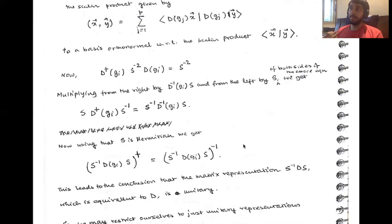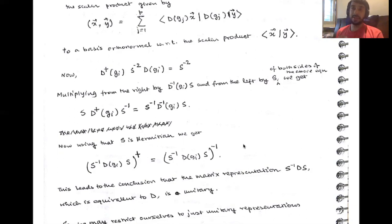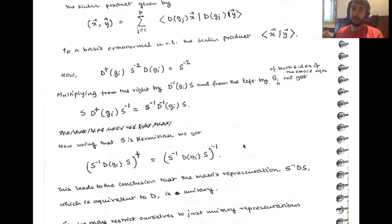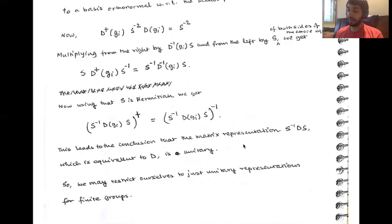So: we started with a generic representation D of some group G, and we have shown that you can construct from it some particular equivalent representation which is explicitly unitary — and that means D is also equivalent to a unitary representation. This is a physicist's way of proving that all you require are unitary representations of finite-dimensional groups, and that is what we will stick to. When we go to infinite groups, there can be non-unitary representations as well, but let's not go into that right now.